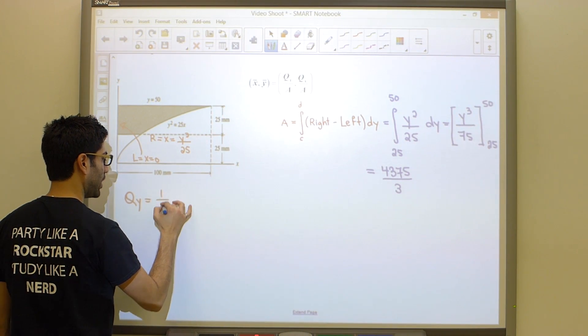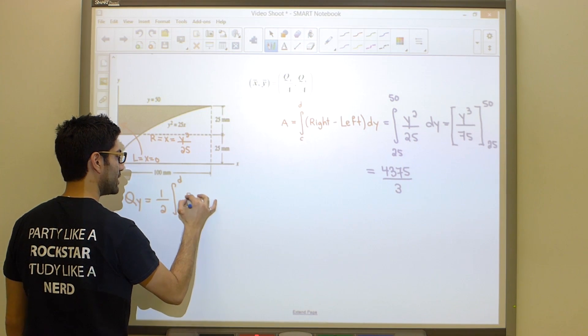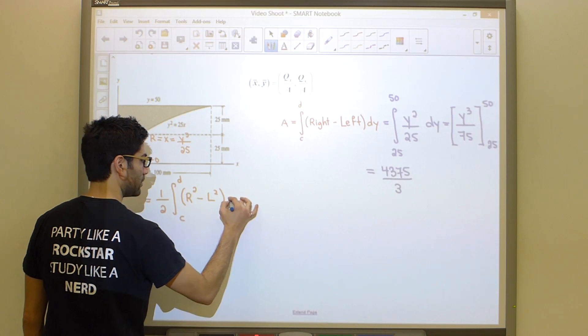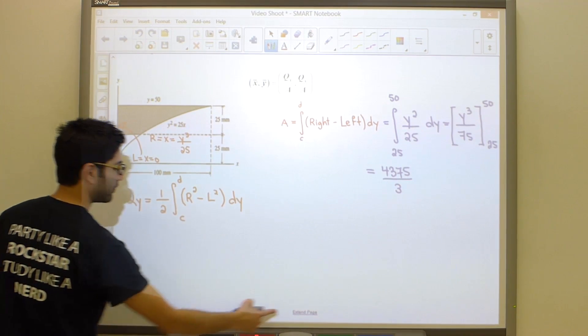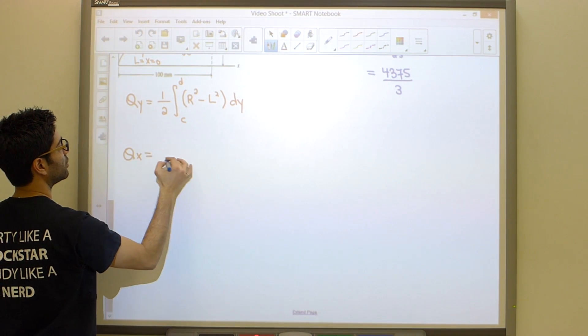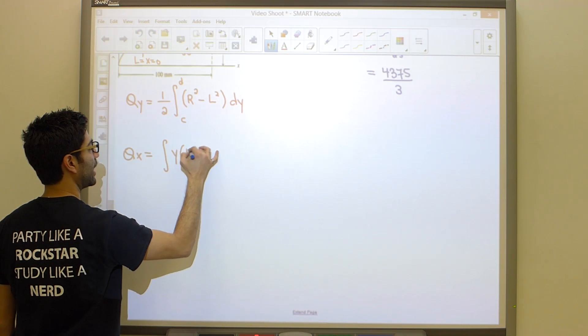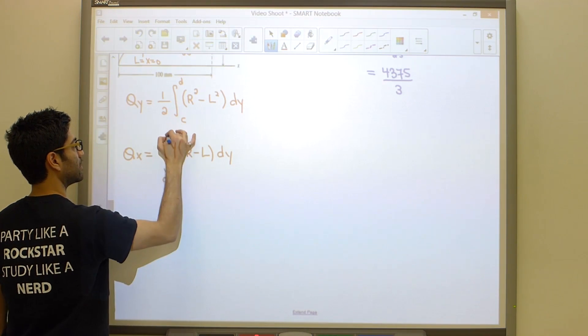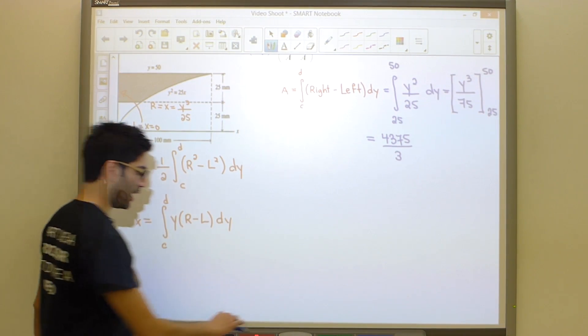It's going to be one half the integral from c to d, the right squared minus the left squared. And similarly, just to be complete, even though we're not going to use this, Qx is going to be the integral of y times right minus left dy. So let's figure out what Qy is in our case.